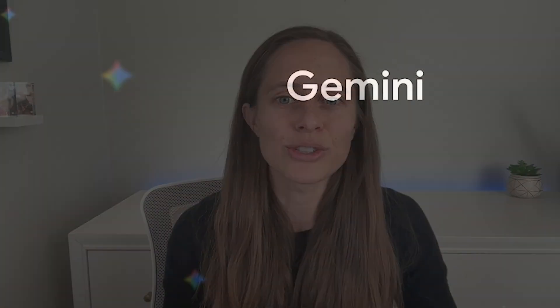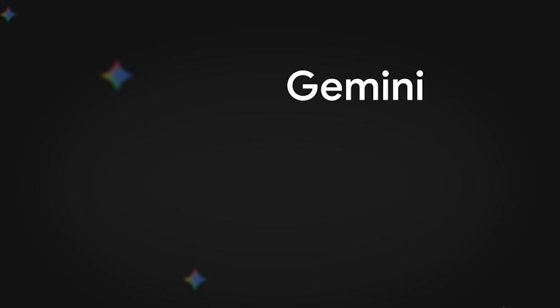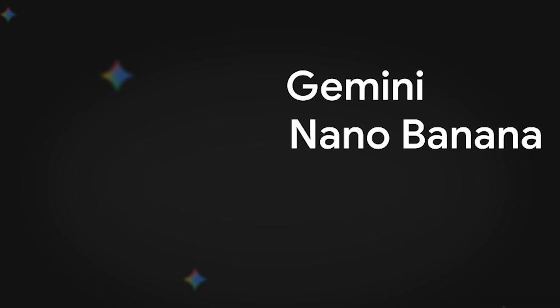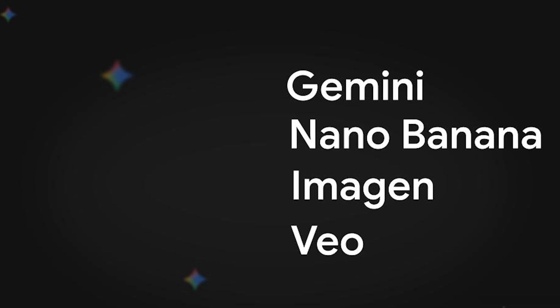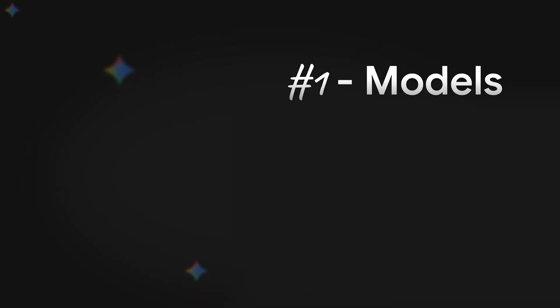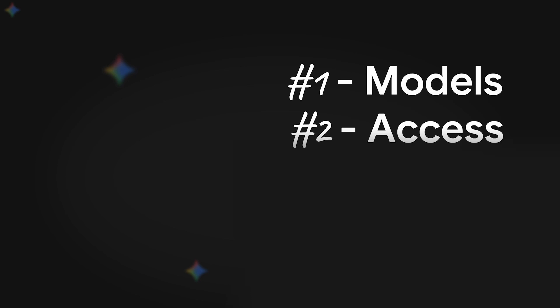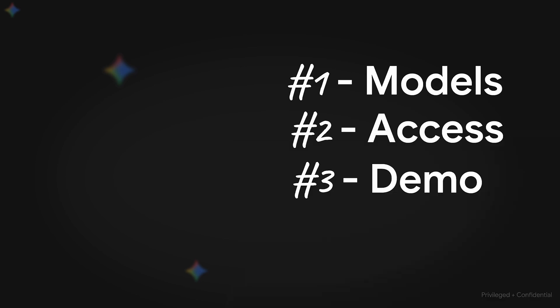You don't have to be an engineer to make magic with this stuff. Today, we're going to talk about Google's generative media AI models like Gemini, Nano Banana, Imagine, and Veo. The goal of this video is to help you use AI as a tool in your creative process. We'll start with what are the models, then discuss where to access the models, and lastly, I'll demo how to build a social media campaign using the models. So let's jump in.